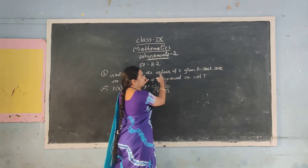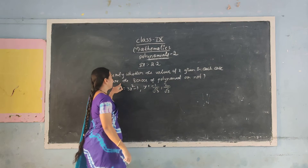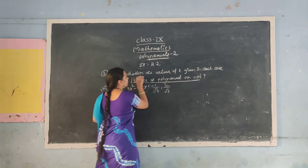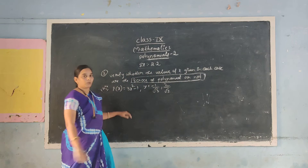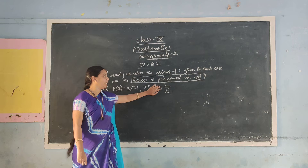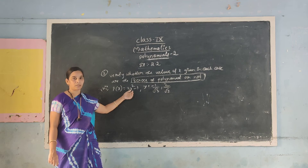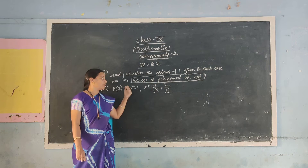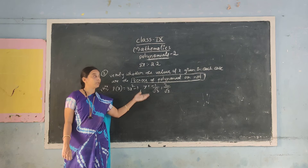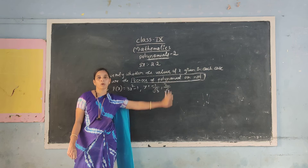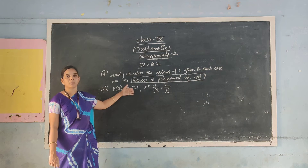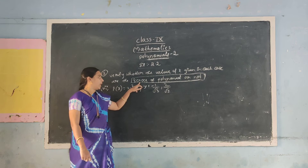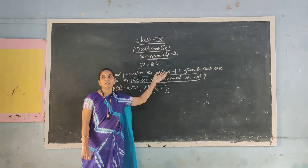Verify whether the values of x given in each case are the zeros of the polynomial or not. How to find the zero of a polynomial? If any number is substituted in the place of x and you get the answer 0, then that is the zero of the polynomial. If you do not get zero, then it is not the zero of the polynomial.